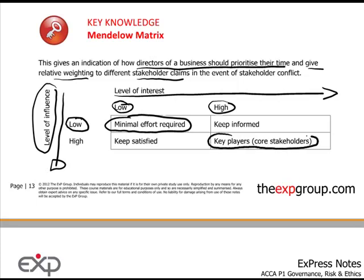At the other end of the spectrum, somebody who is high interest and high influence is known as a core stakeholder. Clearly in this scenario, as a director, you would keep very much focused on their interests, keeping them happy and informed. The other two quadrants — 'keep satisfied' and 'keep informed' — differentiate the remaining stakeholders, but you'd obviously not focus on them to the same extent as the high-high category.